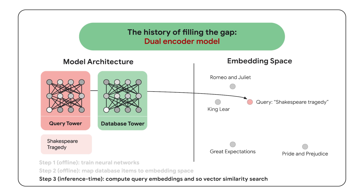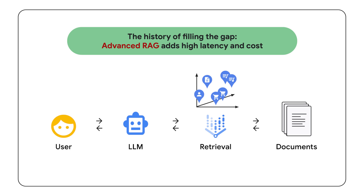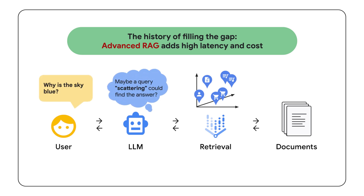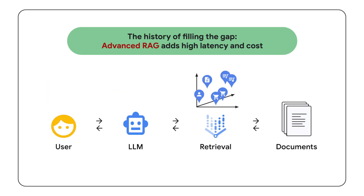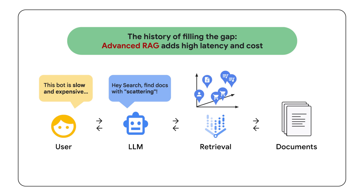However, designing, training, and deploying a production retrieval system with a customized dual encoder model is challenging. It requires expertise in data science and ML engineering, along with substantial effort to train the model on a dataset of question-answer pairs. The rise of LLMs has led to advanced RAG approaches like HyDE, which leverages LLM reasoning to generate potential answer texts for similarity searches, and query expansion, which expands the original query with potential answer candidates. The downside is that these LLM-based approaches add latency of a few seconds and high cost to every query, compared to vector search which can finish within milliseconds at low cost.